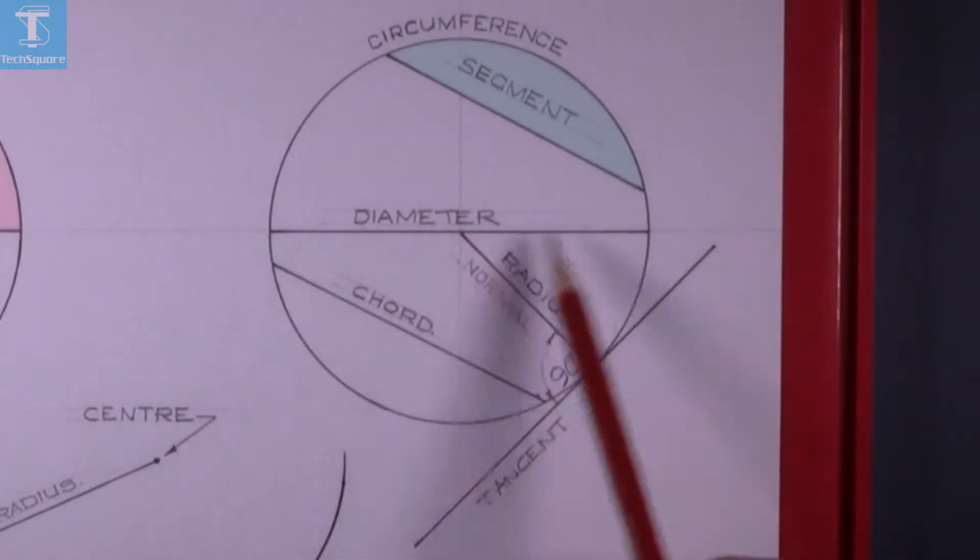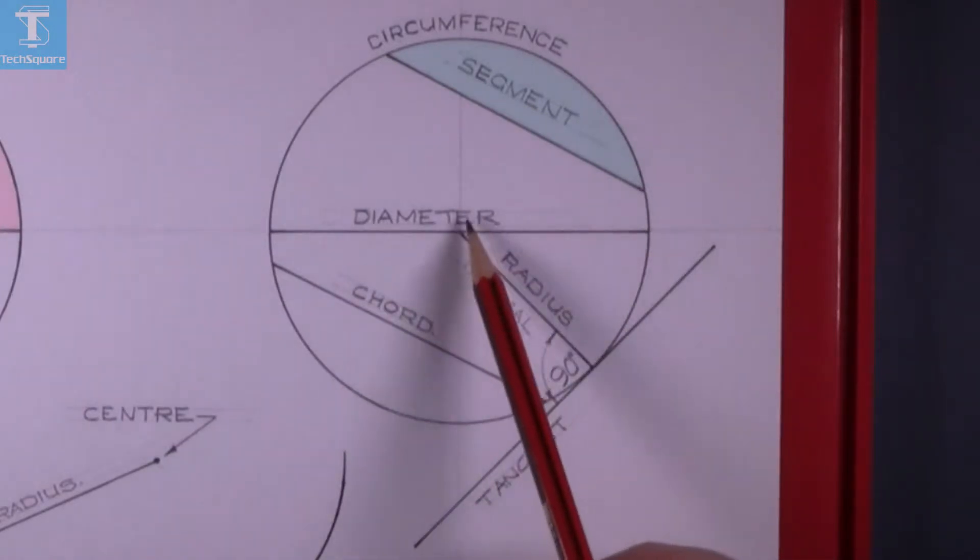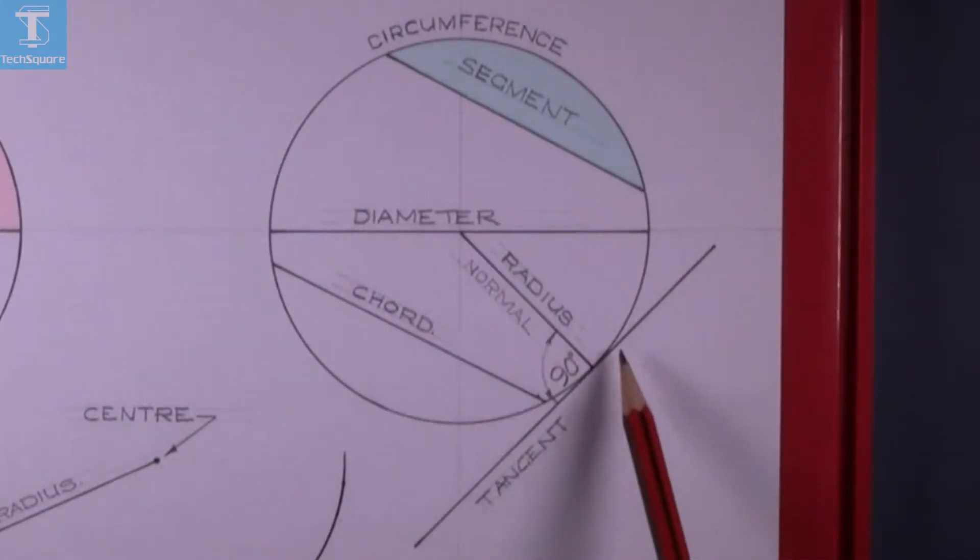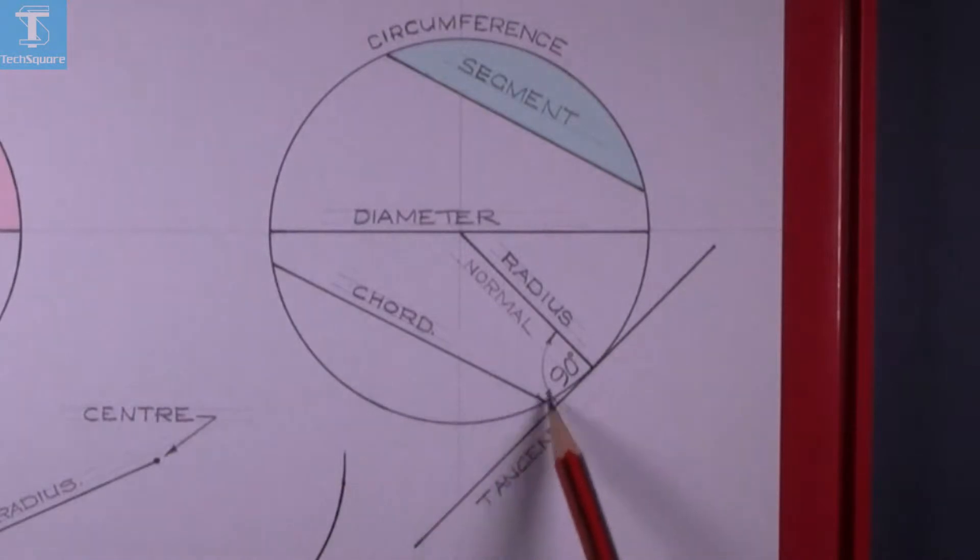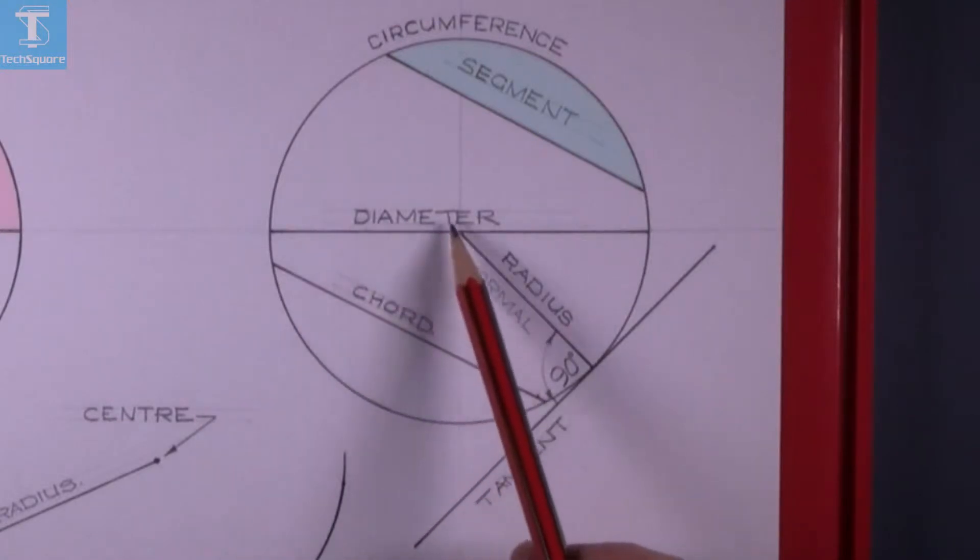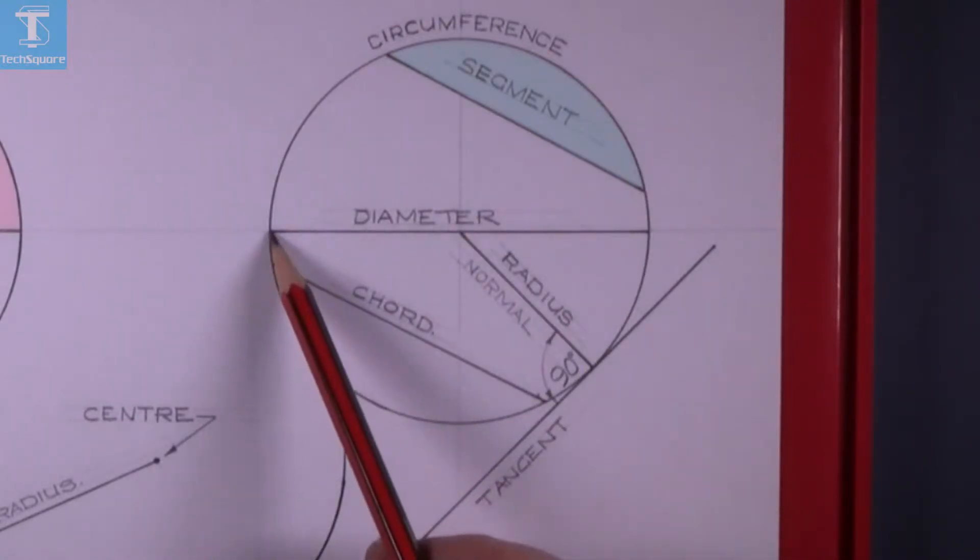The line from the center point out to the circumference is called the radius. A line that cuts the circumference in two places is called a cord. A diameter is a special cord because it cuts the circumference in two places and goes through the center point of the circle.